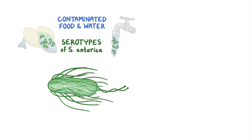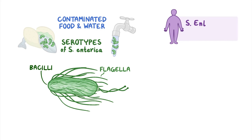All Salmonella bacteria are bacilli, which means rod-shaped bacteria. Salmonella has flagella all over its surface, allowing it to move. The bacteria use a needle-like structure to inject host cells with bacterial proteins during infection. In humans, most cases are caused by the S. enteritidis and S. typhimurium serotypes.